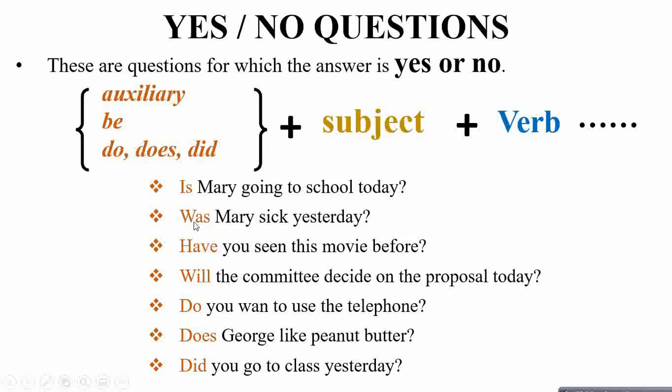Example 2: Was Mary sick yesterday? Here 'was' is the auxiliary in past tense. 'Mary' is the subject, 'sick' is the verb complement, and 'yesterday' refers to the past day.